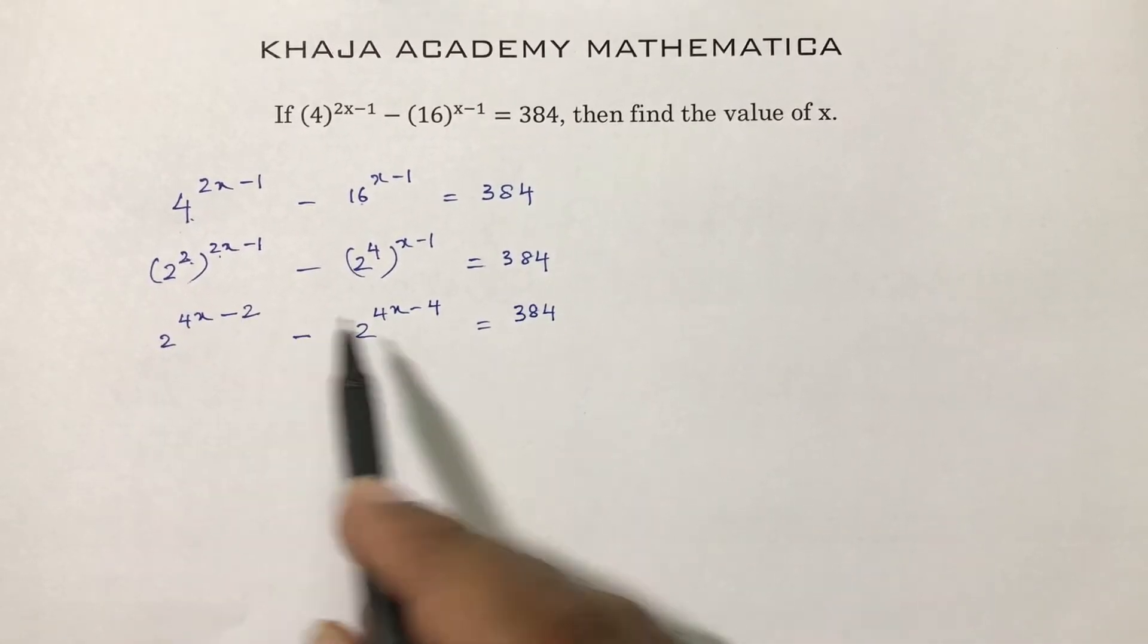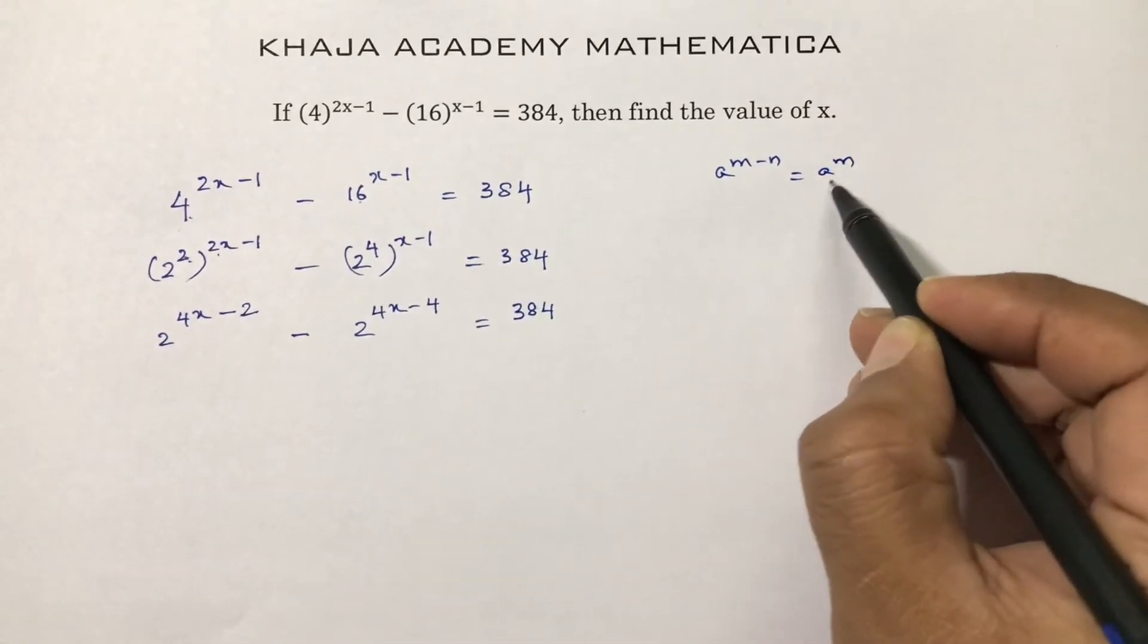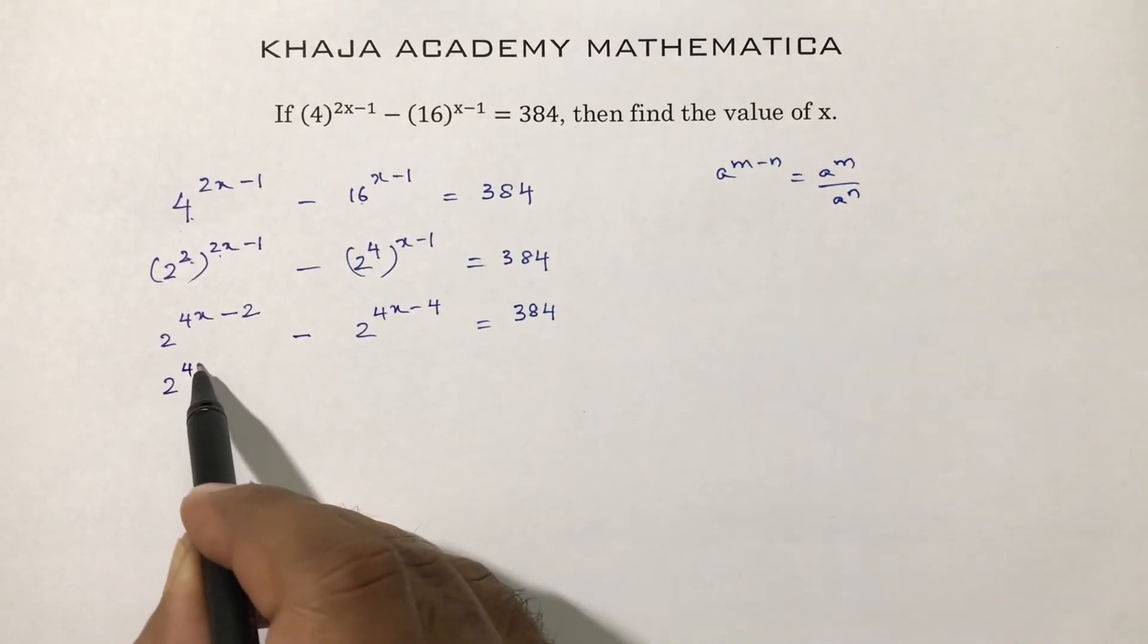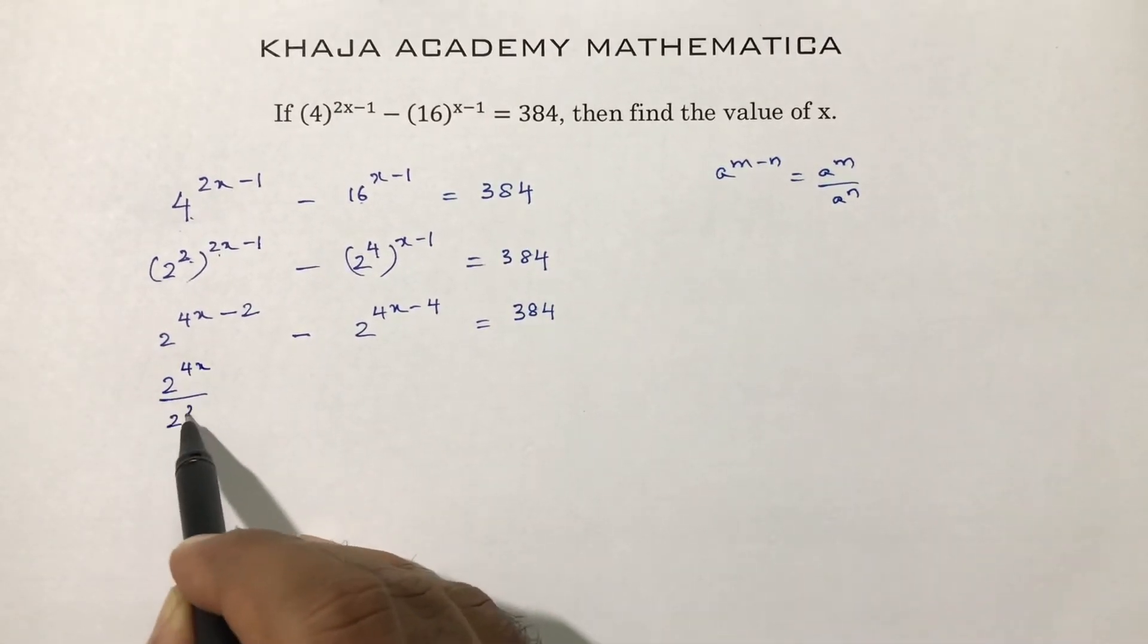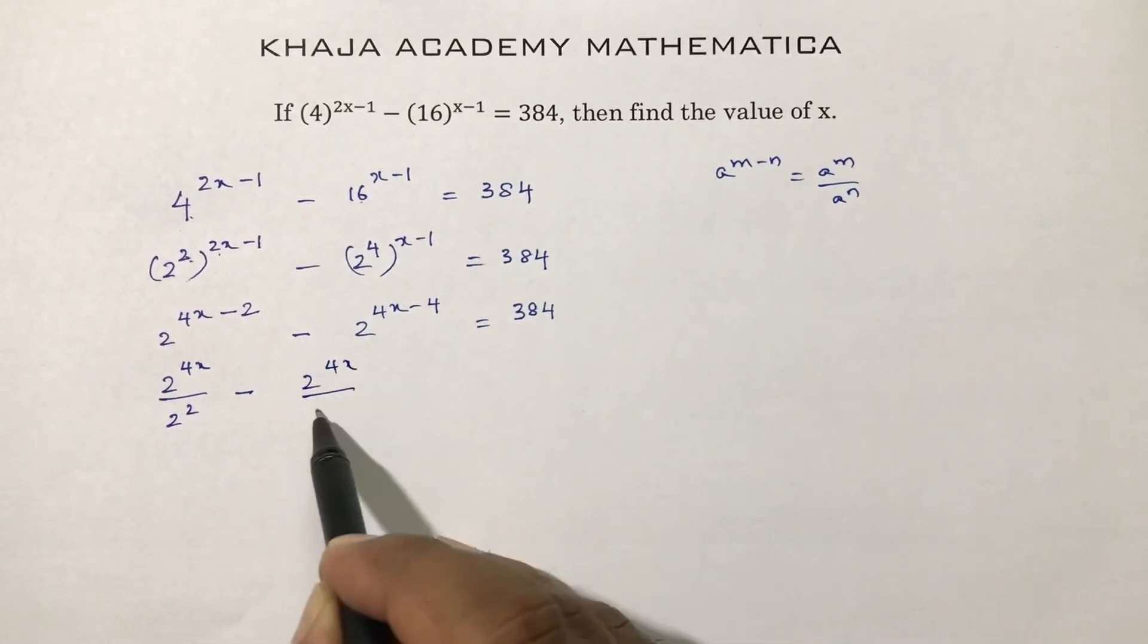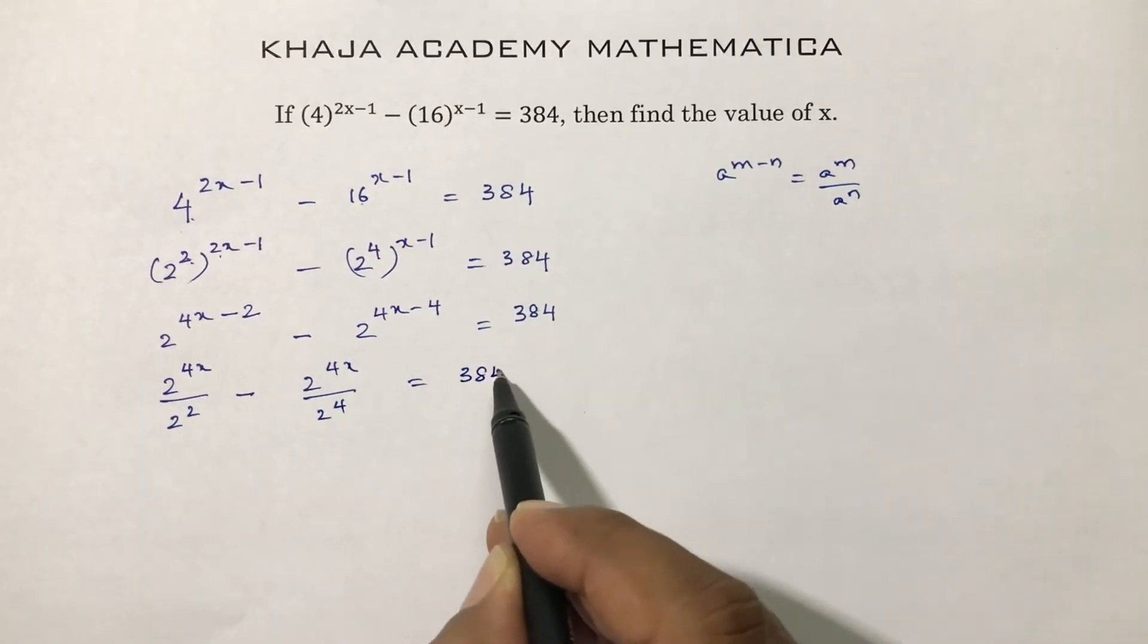Here you can apply the law that is a power m minus n is a power m by a power n. Here 2 power 4x by 2 power 2 minus 2 power 4x by 2 power 4 equals 384.